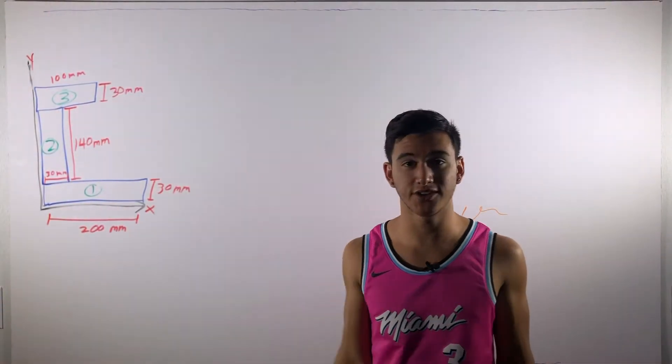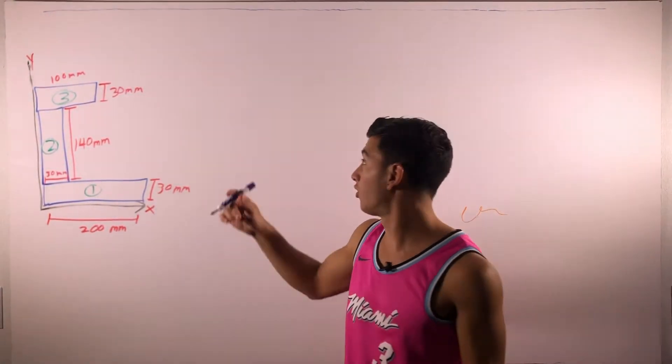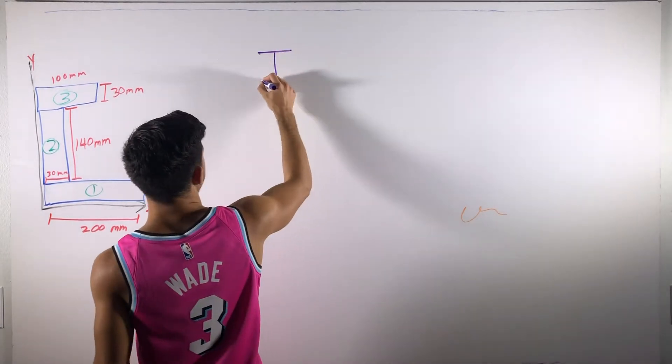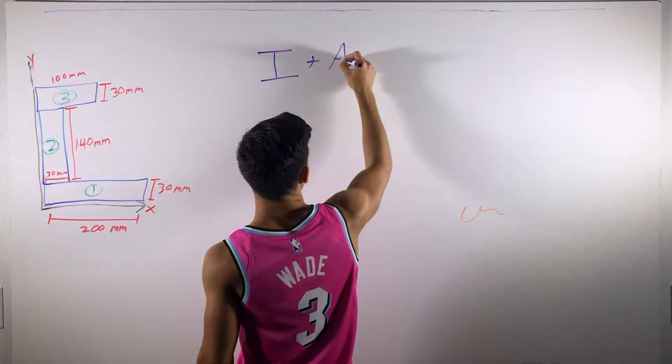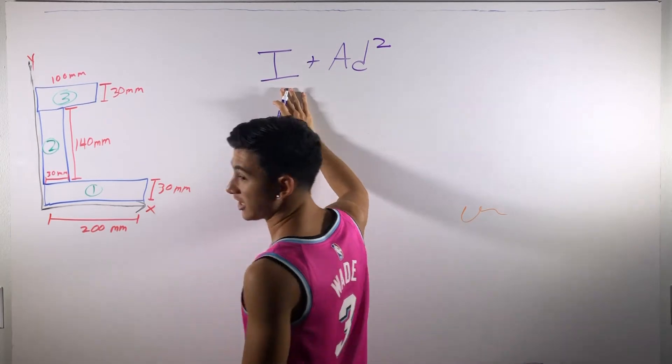Alright, so these problems, this one in particular, they're pretty easy. They're not difficult. All you have to know is remember this equation: I plus AD squared. Now, I can change.